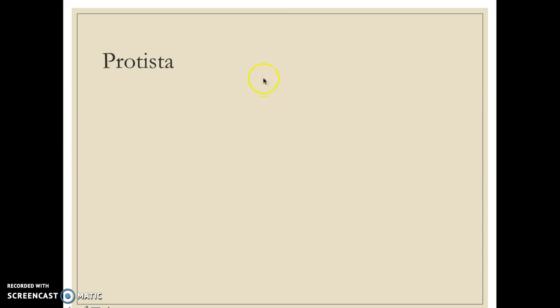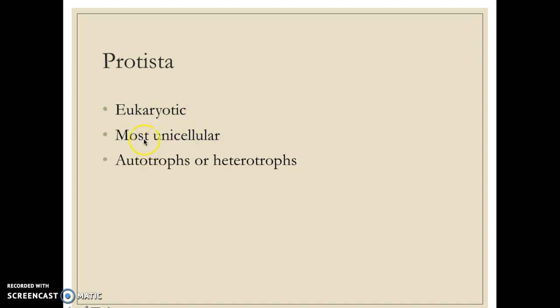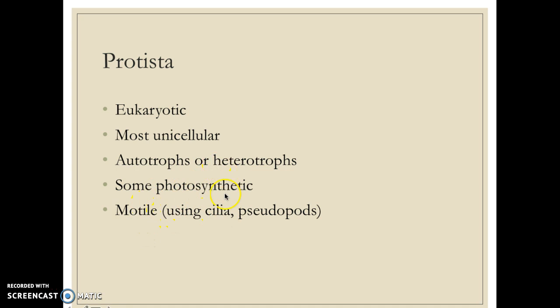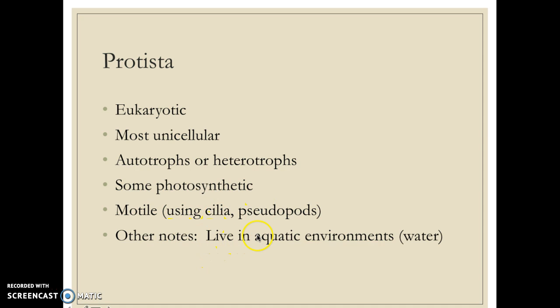The next kingdom is protista. Protists are the very first eukaryotic organisms — they do have a nucleus and are a lot more complex than the bacteria we've talked about. Most of them are unicellular, however, making this one of the few kingdoms with many unicellular eukaryotic organisms. They can be autotrophic or heterotrophic; for the most part they are photosynthetic, and they do move using cilia or pseudopods to get around their environment.